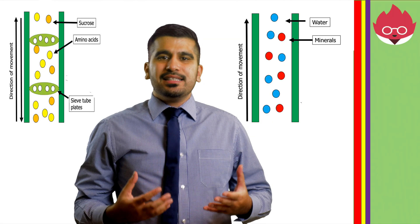Our heart evolves through several stages in the mother's womb, resembling a fish's heart, then a frog's, and then a snake's, before finally adopting the four-chambered human heart.